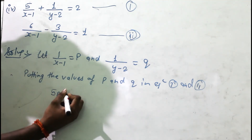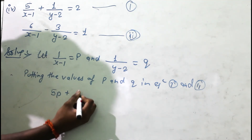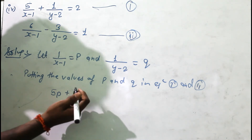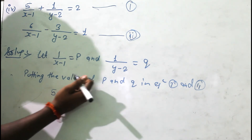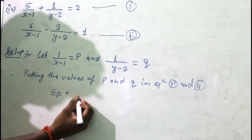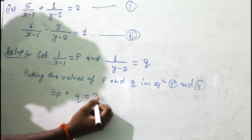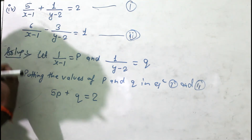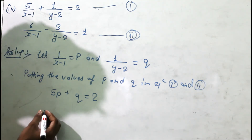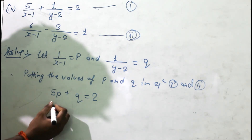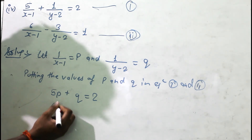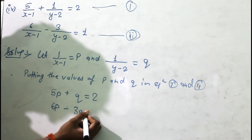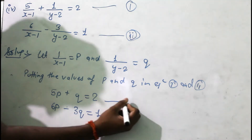After substitution we get: 5p + q = 2 as equation three, and another equation as equation four.